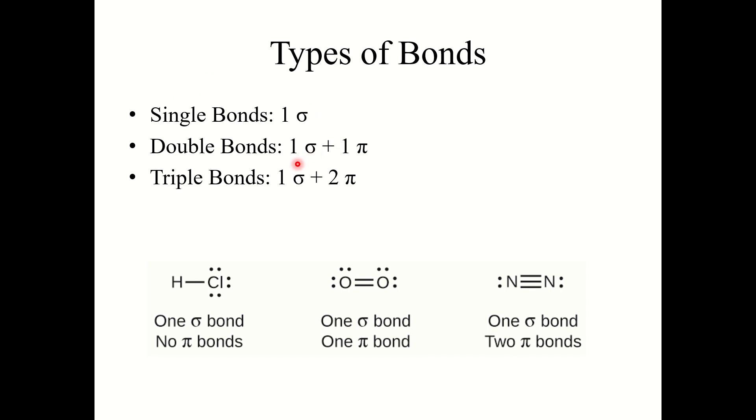Double bonds are one of each. One sigma and one pi. And then triple bonds are one sigma and two pi. So here with this single bond we've got one sigma bond. Here with oxygen gas we've got a double bond. This is one sigma, one pi. Here with nitrogen gas we've got a triple bond which is one sigma and two pi bonds.